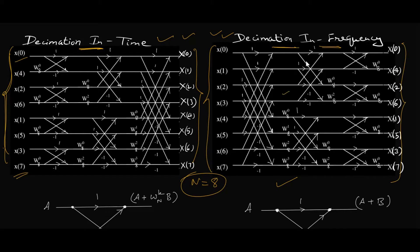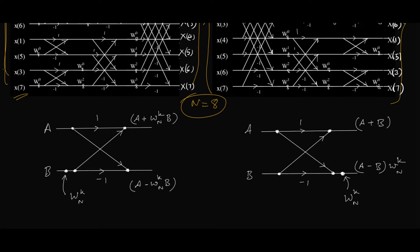Before discussing the full structure, let us discuss the operation of a single butterfly stage in each of these algorithms. These are the general structures of butterfly stages — a single butterfly for DIT and DIF — both with two inputs and two outputs.